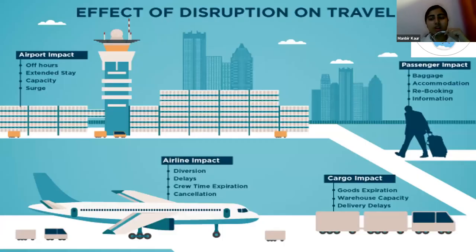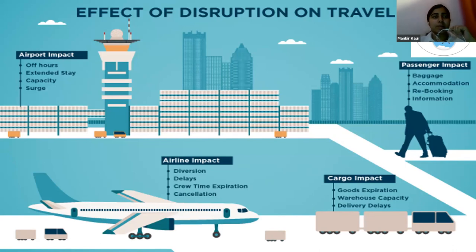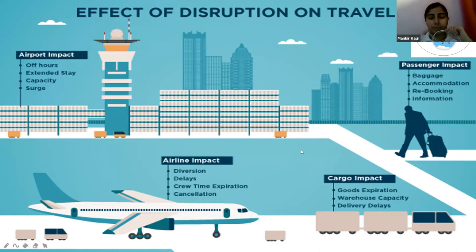Now we'll talk in detail about the effect of disruption on travel. Even a single flight delay can affect things on a larger scale — it can impact the airport, the airline, the cargo, and most importantly the passengers who are the main consumers of this industry. First, we'll talk about airport impact.